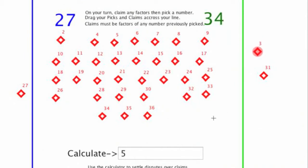They also get to pick a number, so they might pick 23, which is prime. The person who took 27 says, you missed a factor. Factors of 27 also include 9, so I'm going to claim 9 because you missed it, and that's allowed.